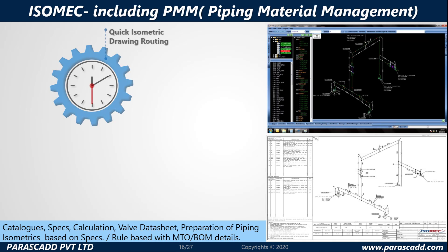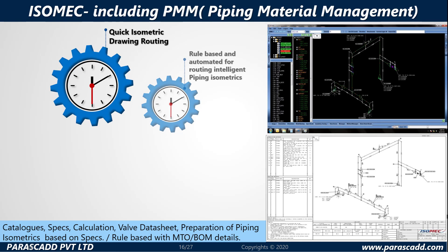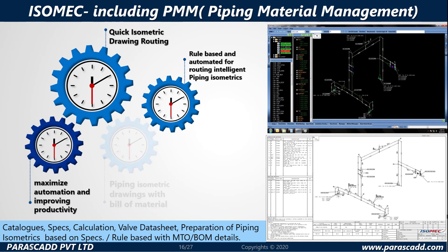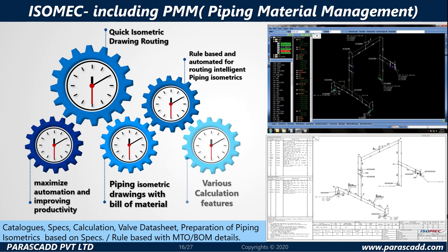Isomec includes PMM — Piping Material Management. We offer quick isometric drawing and routing, rule-based and automated, with maximum automation for improving your productivity. This includes piping isometric drawings with bills of materials, as well as various calculation features which will be covered in depth.